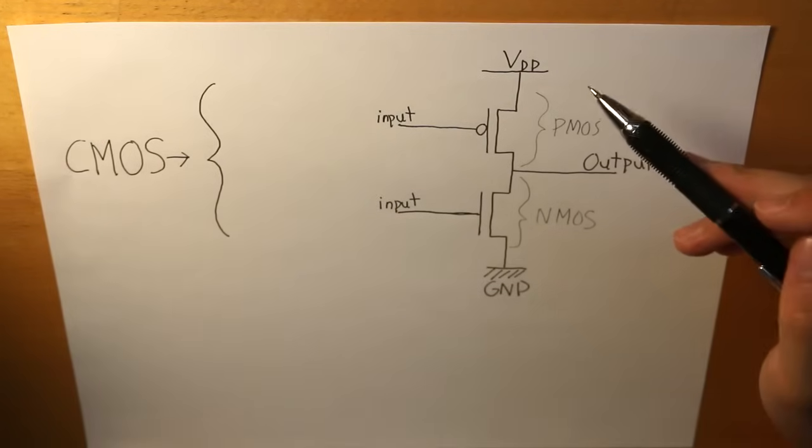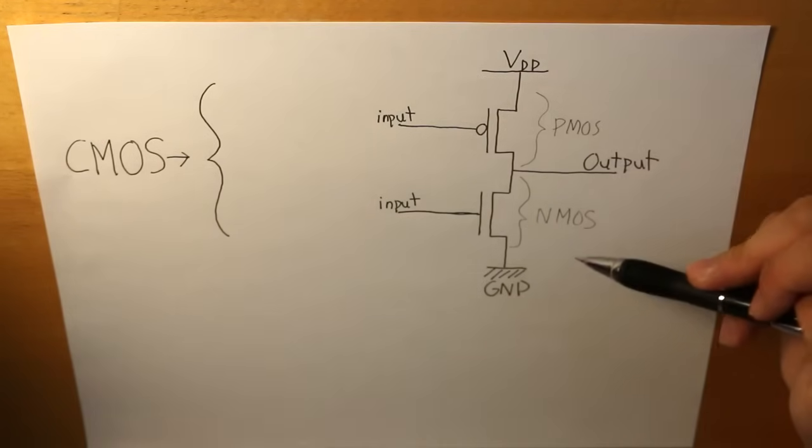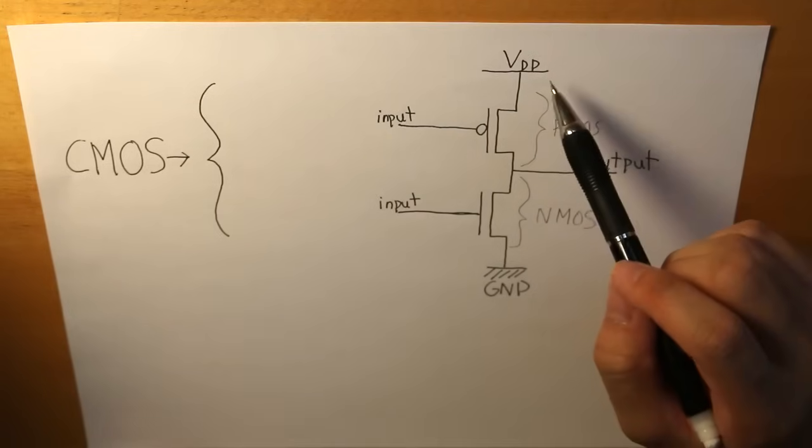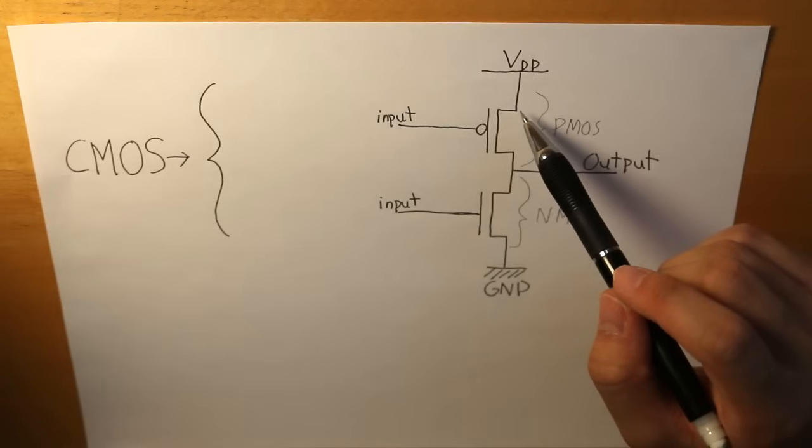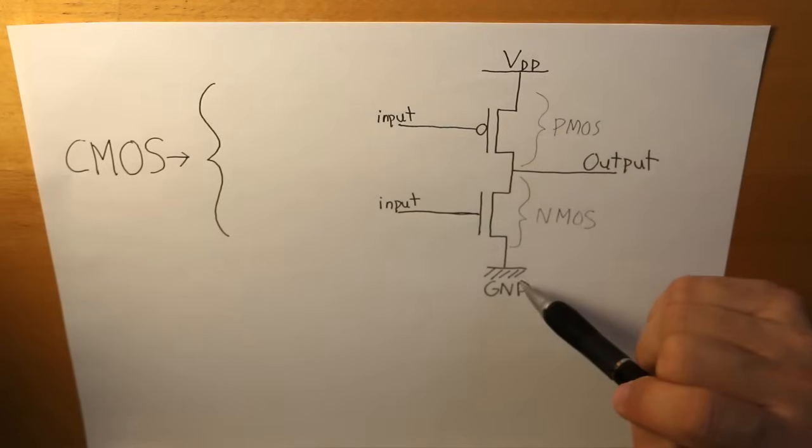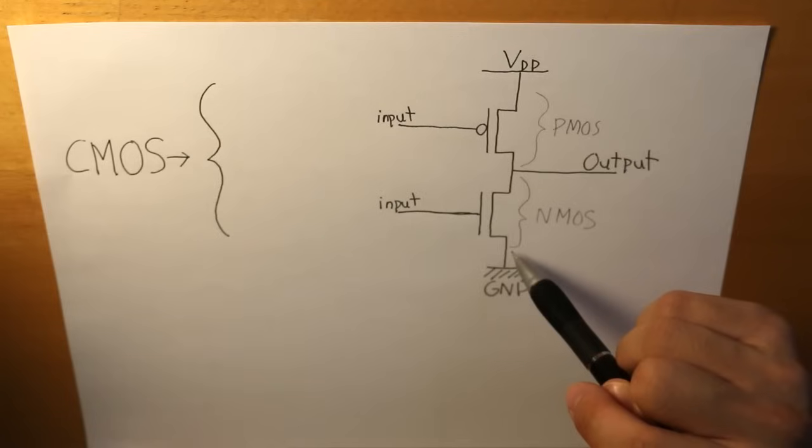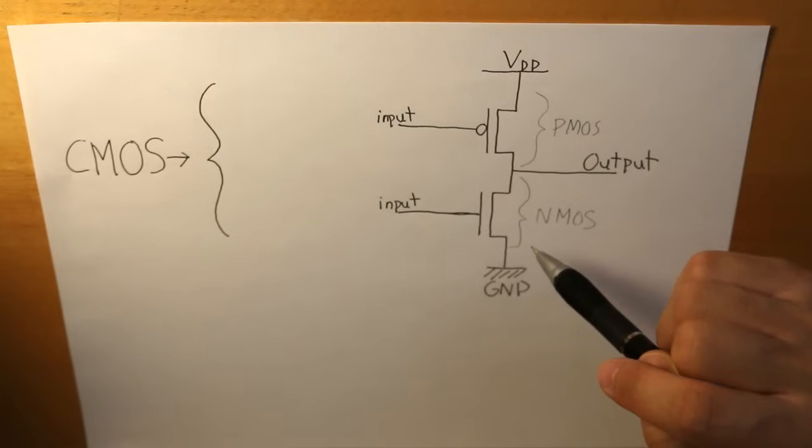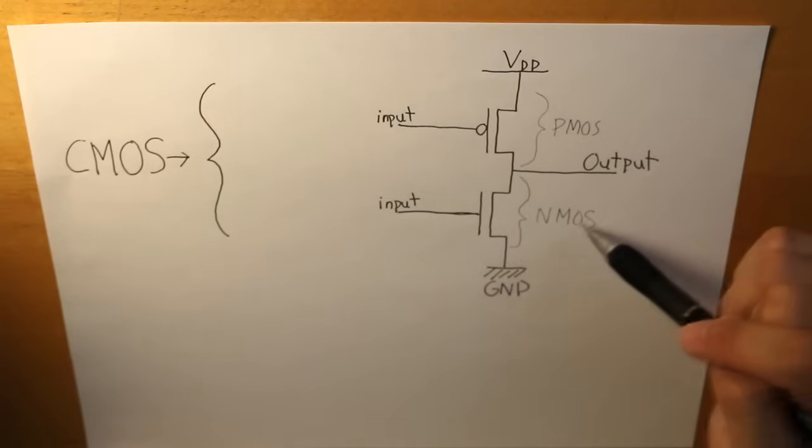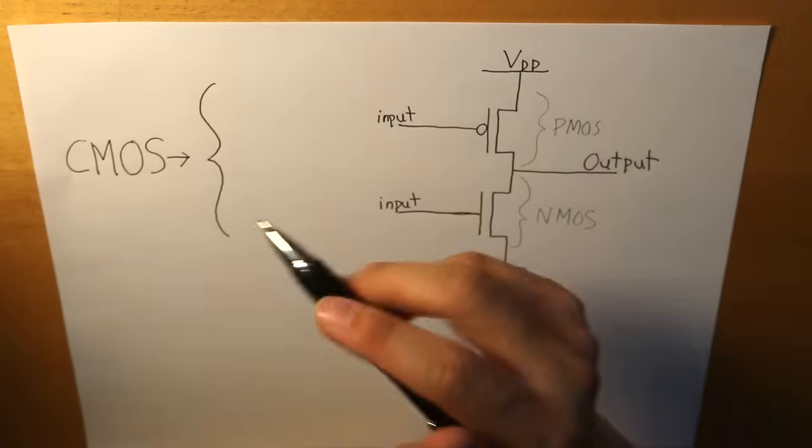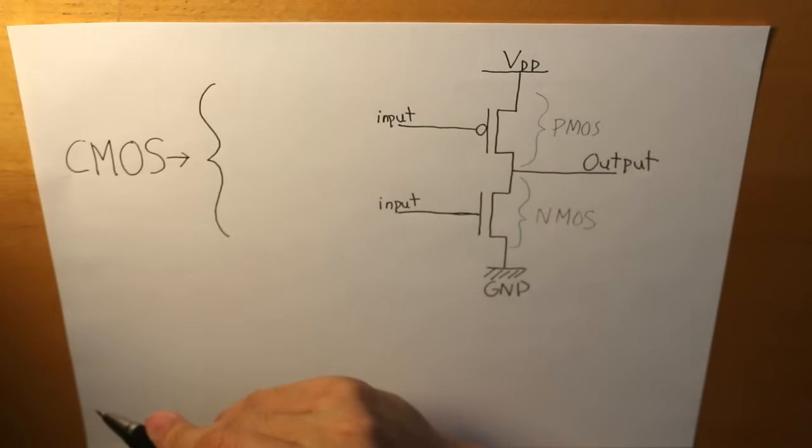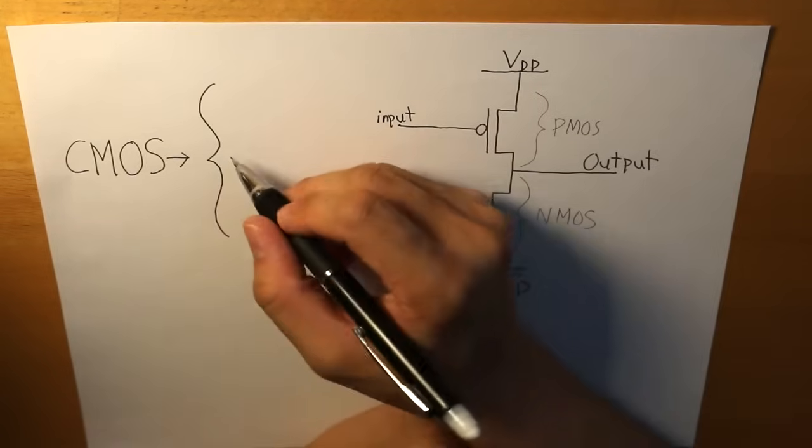In simple terms, if we combine these two together and we have our voltage source connected to the source of our PMOS and the ground connected to the drain or source of the NMOS, we're going to have an inverter. The basic fundamental device of a CMOS is an inverter.